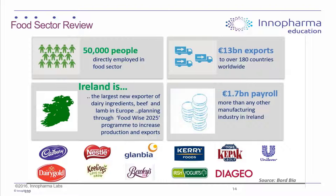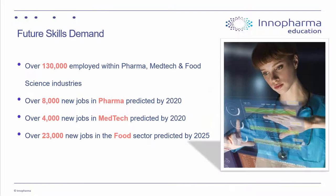The food sector also has a strong presence in Ireland, with companies like Kerry, Nestlé, and Dairygold. There are 50,000 directly employed and €13 billion in exports. There's significant investment partly driven by Brexit, and there is a skills shortage across pharma, medtech, and food — making all three growing sectors where organizations are looking to invest in skilled employees.